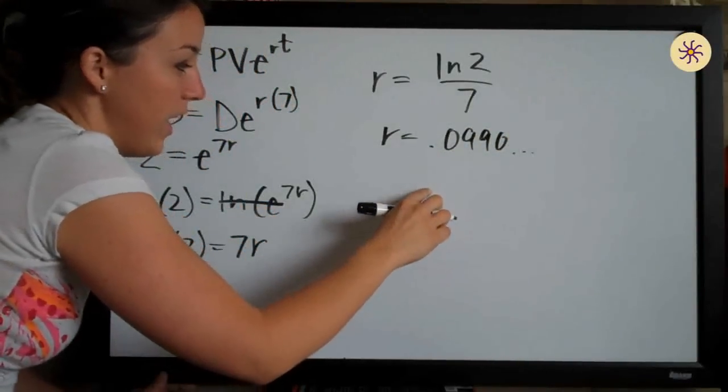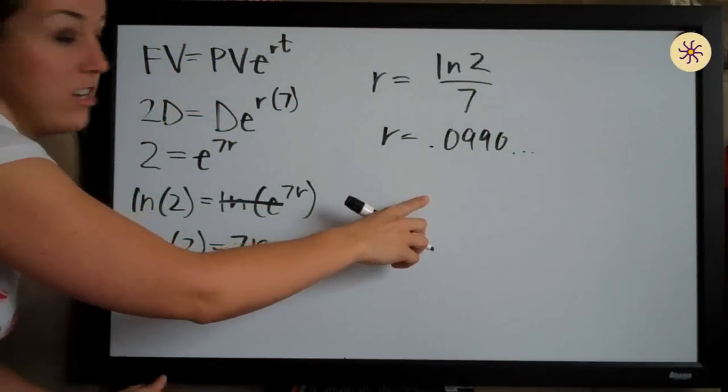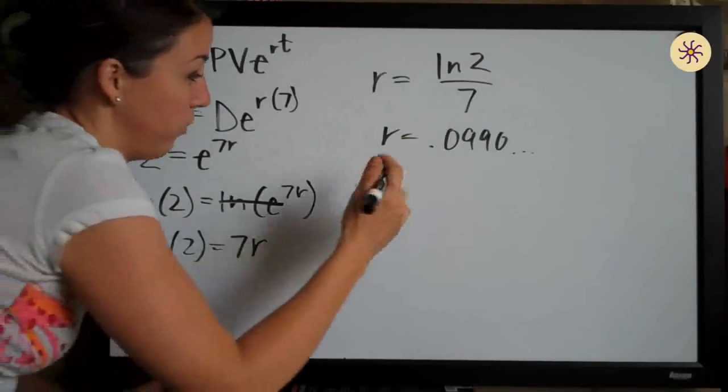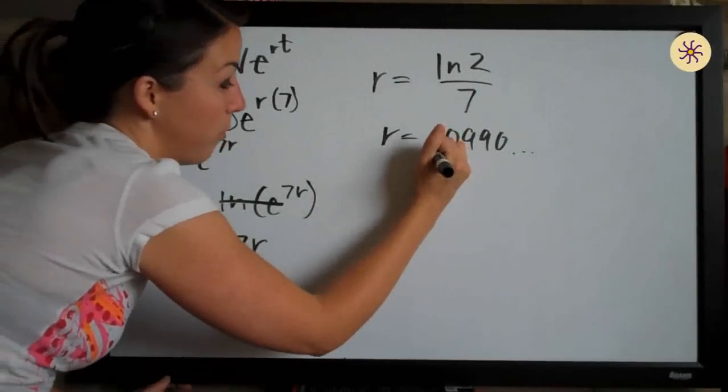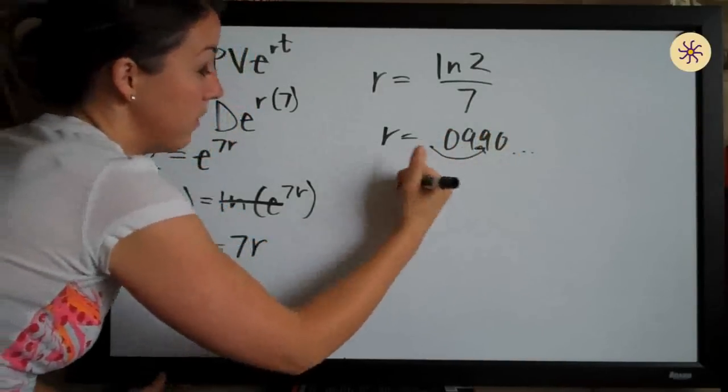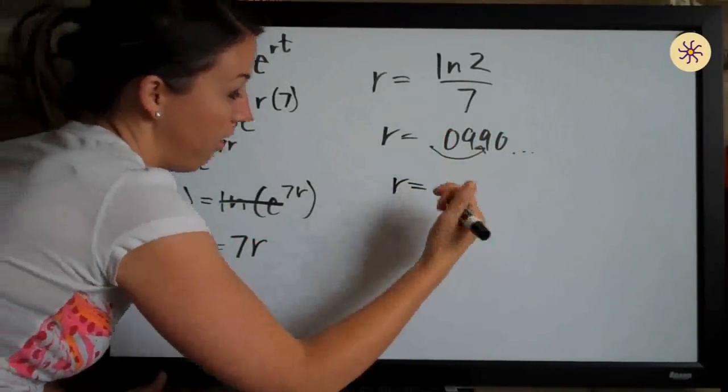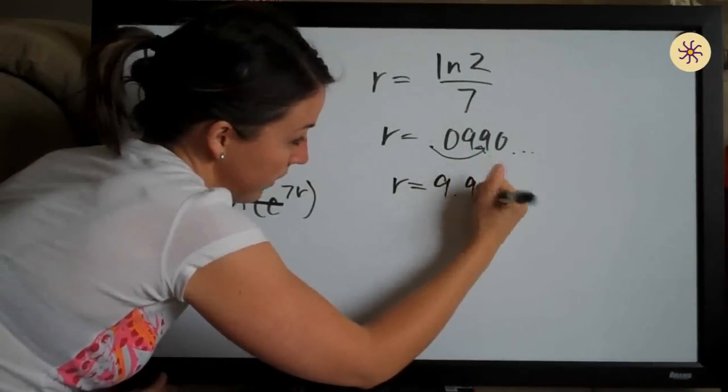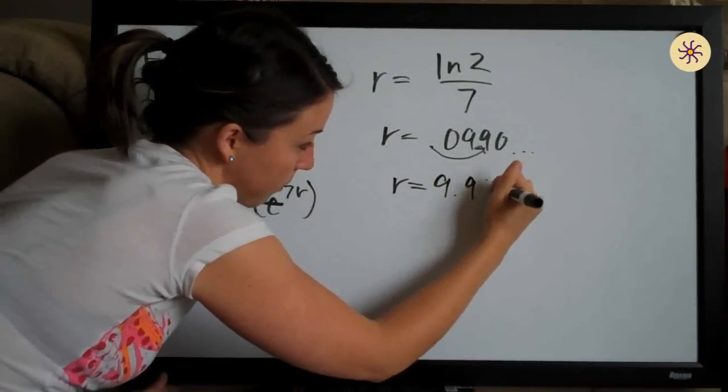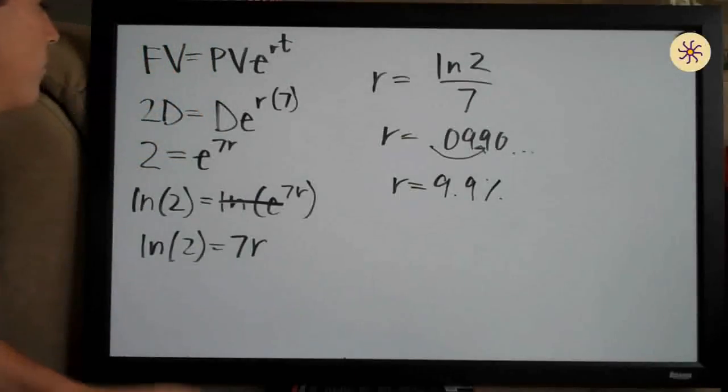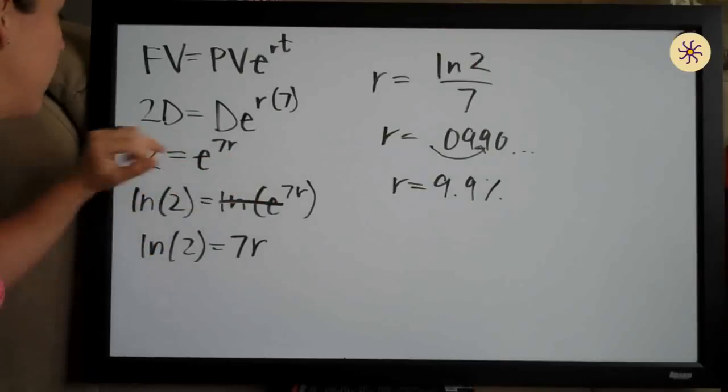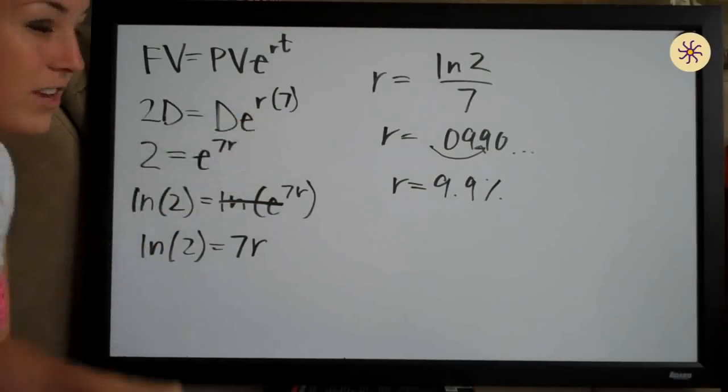So if we're trying to find the percentage, we move the decimal point over 2 places and we can see that our annual percentage rate must be 9.9% roughly for an initial deposit with interest compounded continuously to double in 7 years.